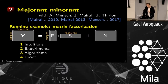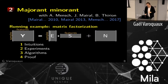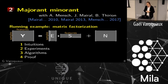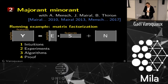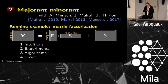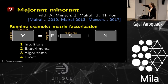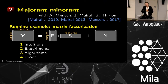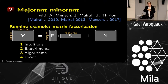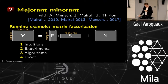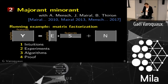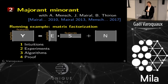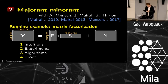Major-minor algorithms are pretty much the same thing as alternated optimization, and I'll explain why. The Mairal 2013 paper really proves the convergence of this class of algorithms in stochastic settings. Unfortunately it's an extremely technical paper and so it's not read a lot — it's really hard to read.